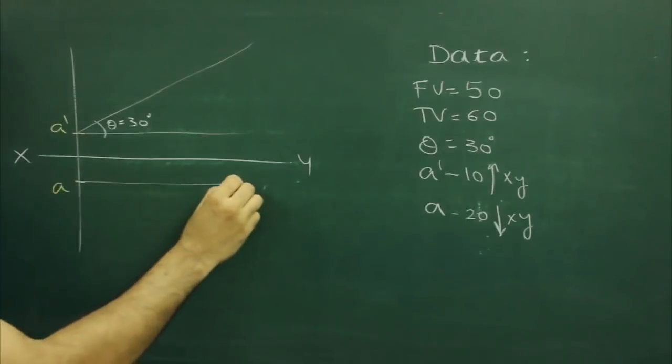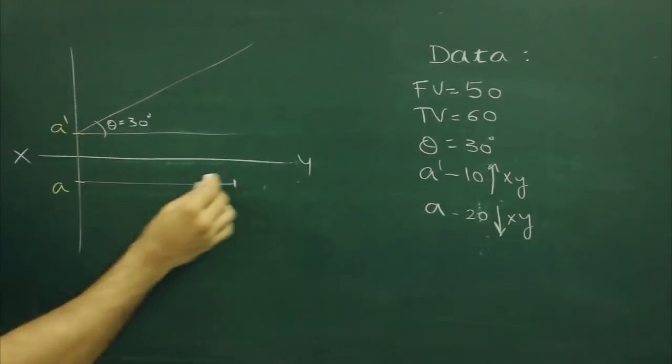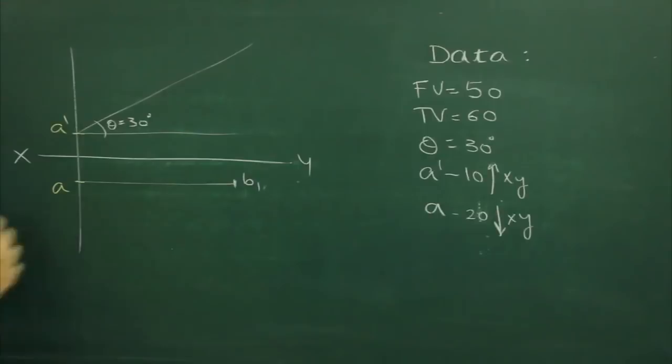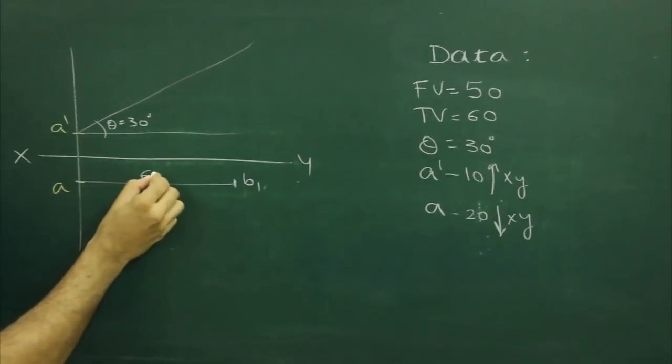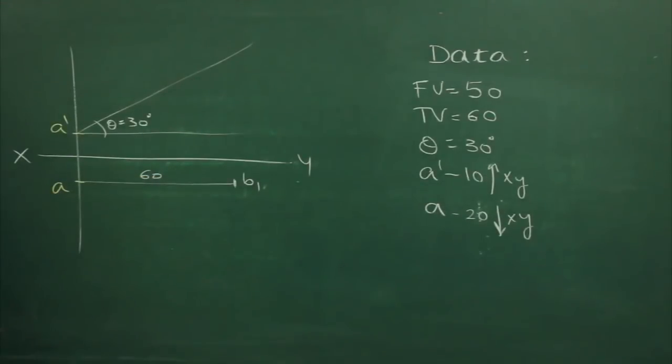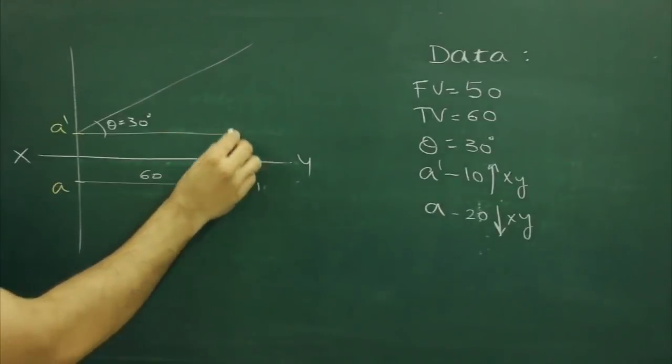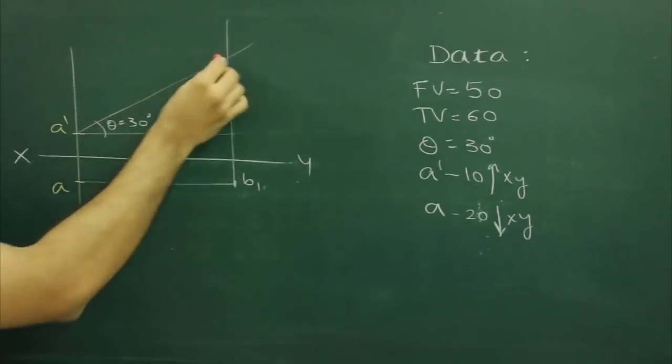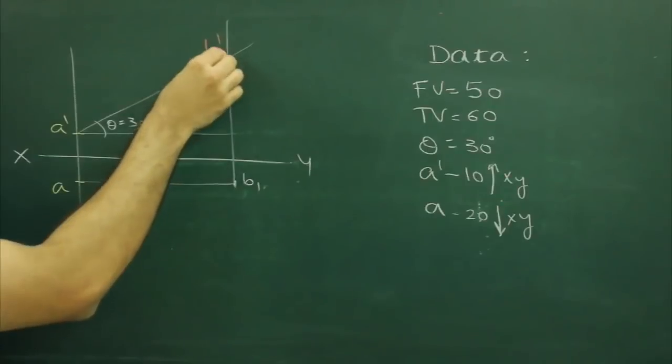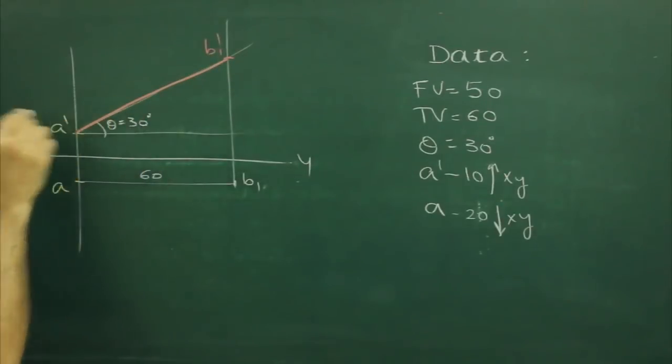So I can mark top view over here. That would be B1, that would be 60mm. Then project straight up from B1. Wherever it will cut, that would be B1', so that would be true length.